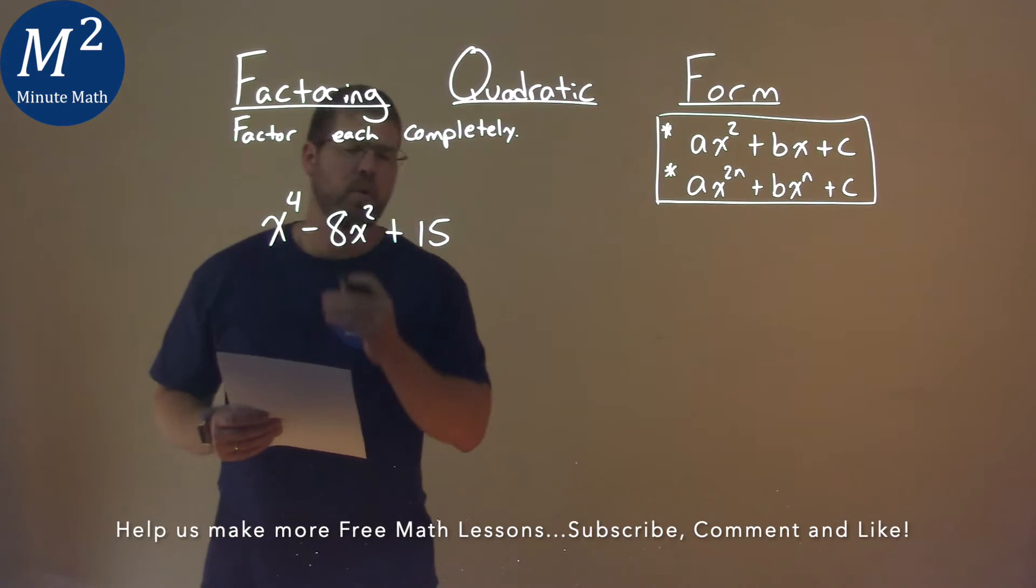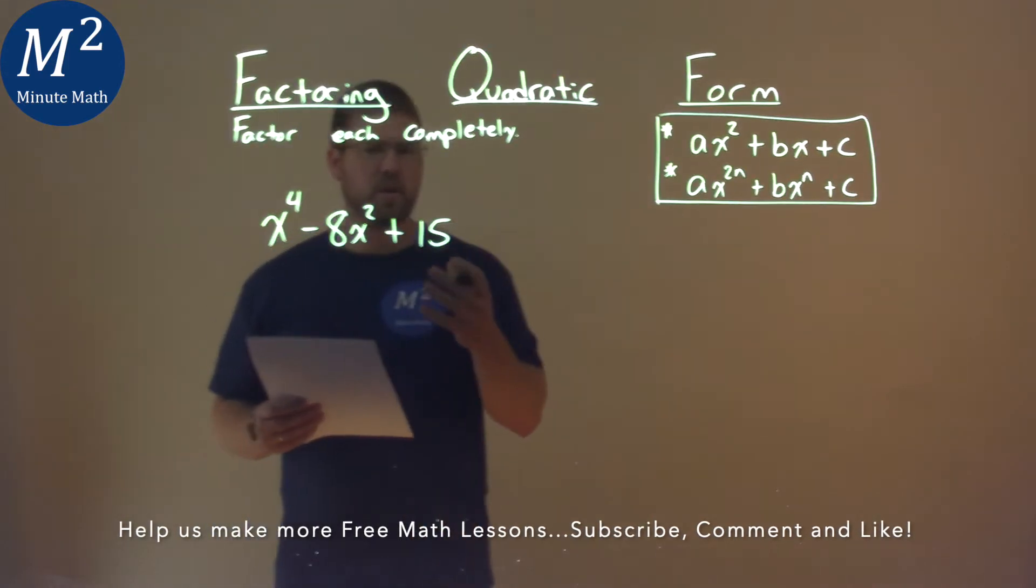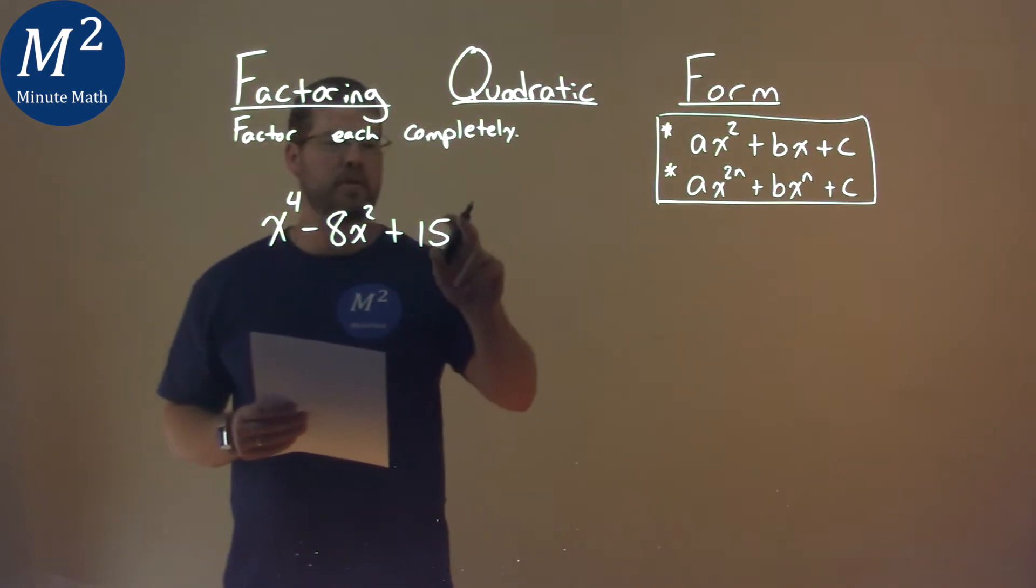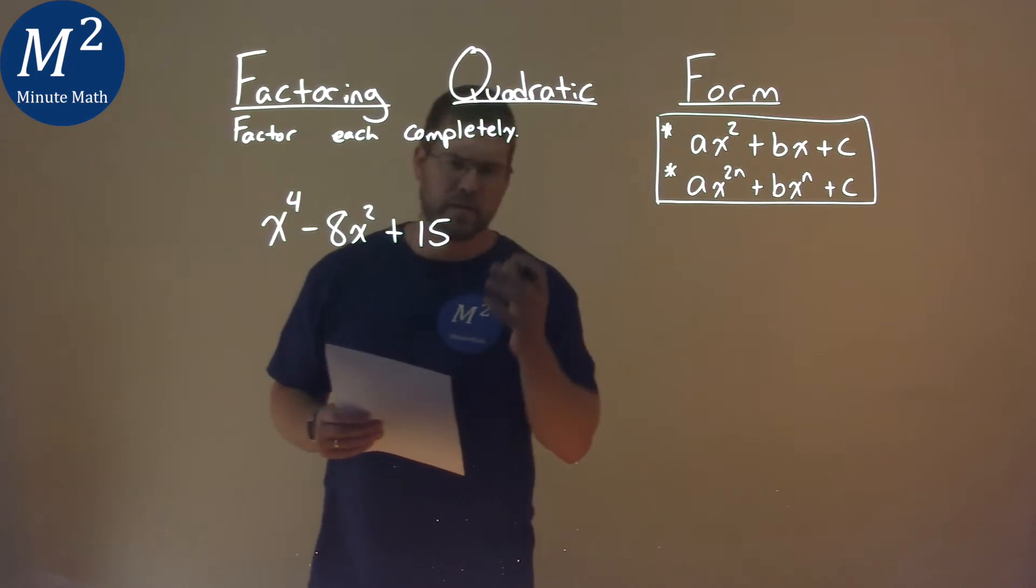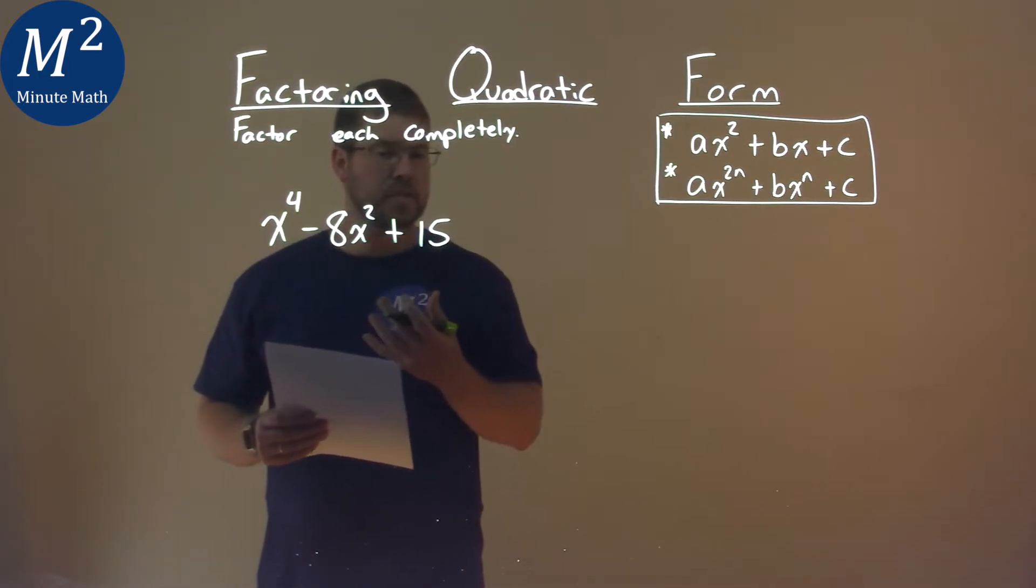Well, this is a quadratic form. It's kind of like a quadratic. We have a fourth power, second power, zero power, for the x value at least. And so the process is pretty much the same.